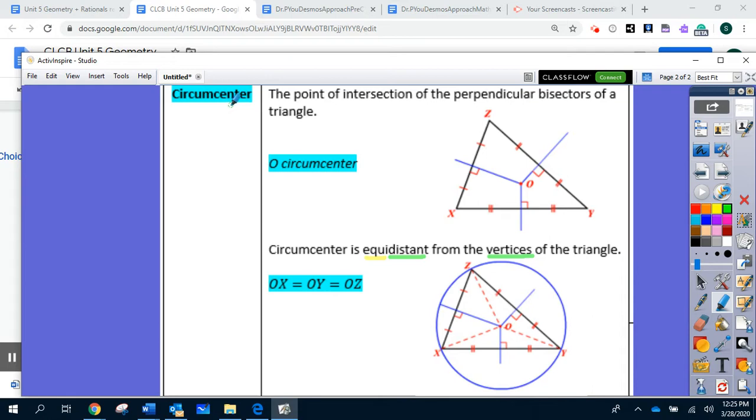There is a theorem that states that all the perpendicular bisectors of a triangle are concurrent and this point of intersection is called circumcenter.